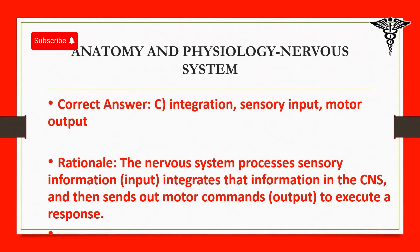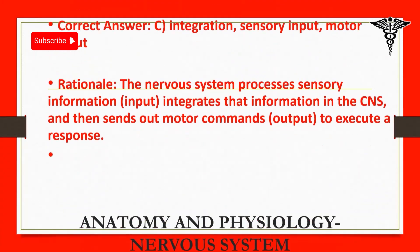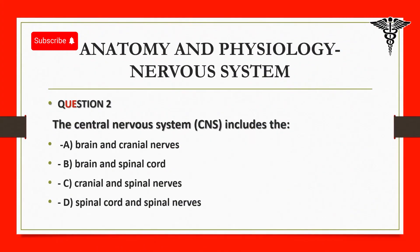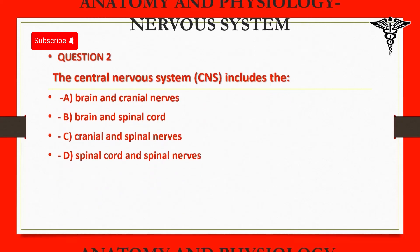Question 2: The central nervous system (CNS) includes the: A. Brain and cranial nerves. B. Brain and spinal cord. C. Cranial and spinal nerves. D. Spinal cord and spinal nerves.